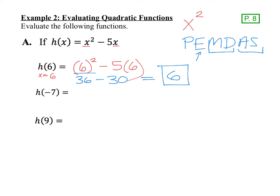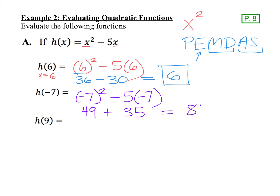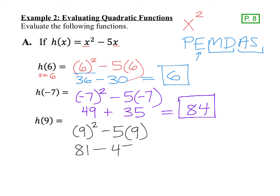Let's try h(-7). Replace the x with negative 7 — make sure you put parentheses around it, including when typing into a calculator. Negative 7 squared means negative 7 times negative 7; a negative times a negative is a positive, so that's 49. Then negative 5 times negative 7 is positive 35. Adding those together, 49 plus 35 is 84, so h(-7) = 84. For h(9): 9² is 81, 5 times 9 is 45, and 81 minus 45 is 36.